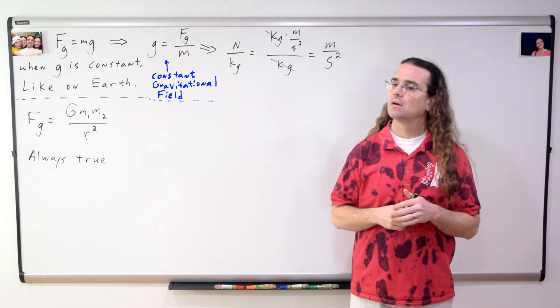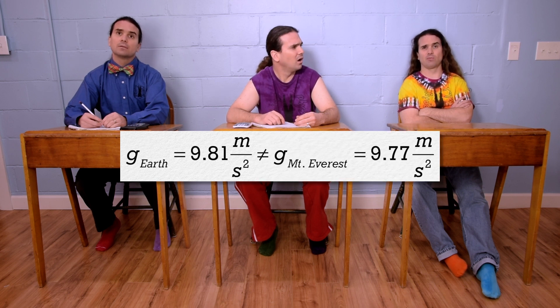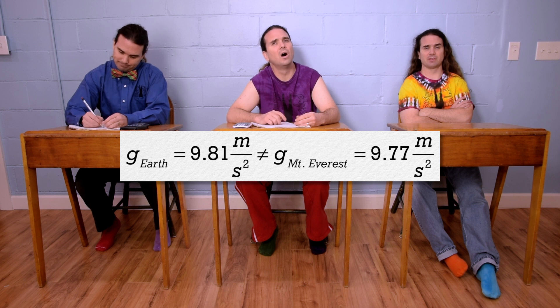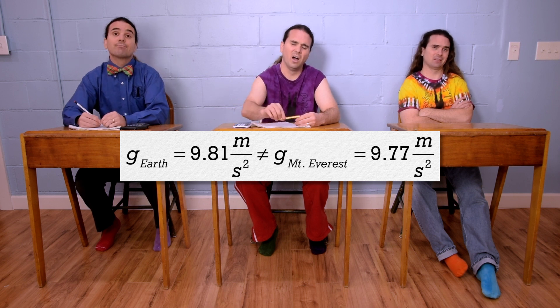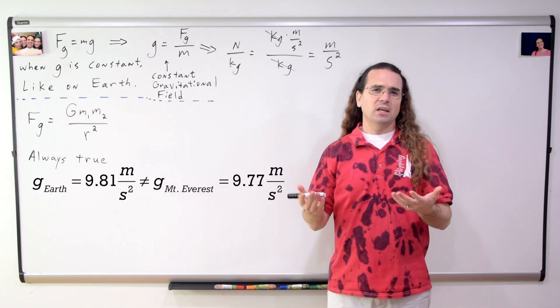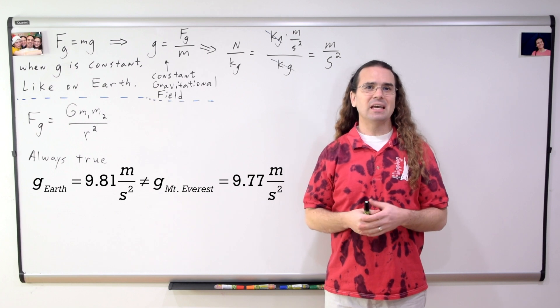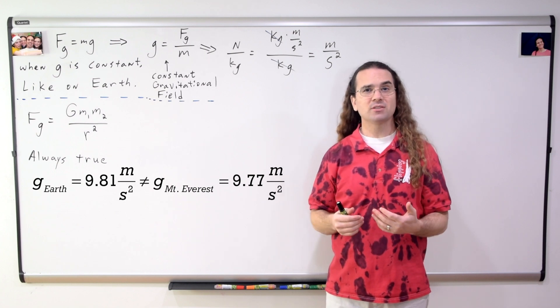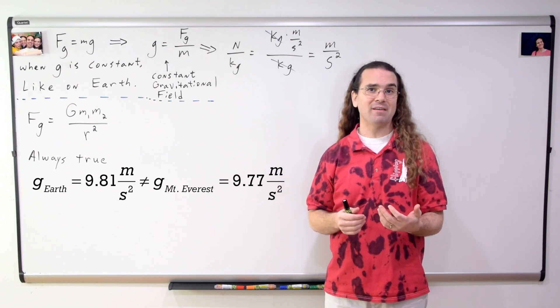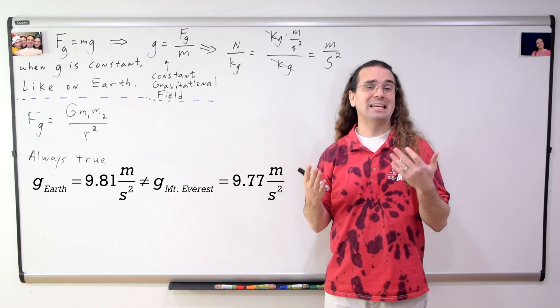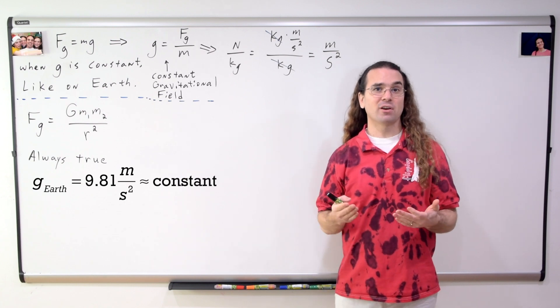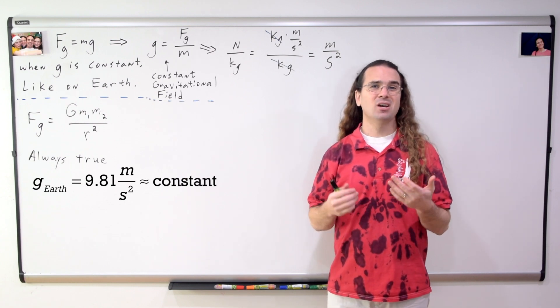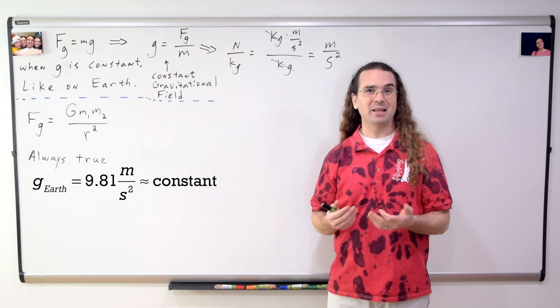Hold up. Did we not recently prove the acceleration due to gravity at the top of Mount Everest is 9.77 meters per second squared and therefore show the gravitational field on the surface of the Earth is actually not constant? Okay, sure, right, so it does vary ever so slightly. However, for our purposes, we can assume the acceleration due to gravity on the surface of our planet is constant and therefore there is a constant gravitational field which exists on the surface of planet Earth.